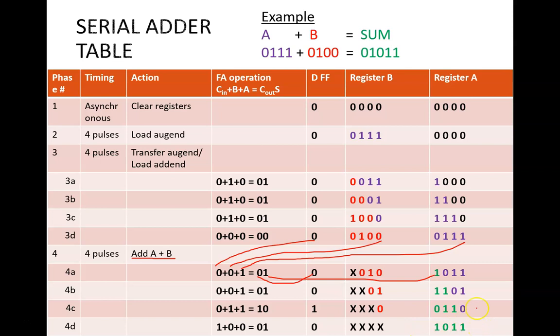This table tells us that 0111 plus 0100 equals 01011. Notice how I read that leading zero from the final carryout value. In decimal, this would be 7 plus 4 equals 11. Good news!